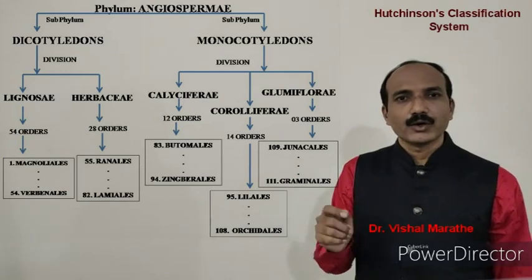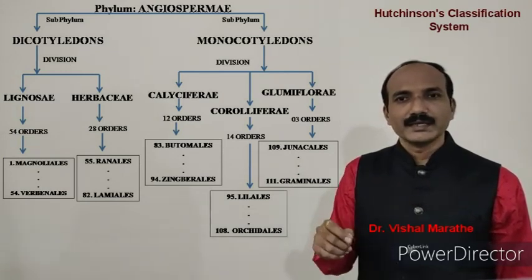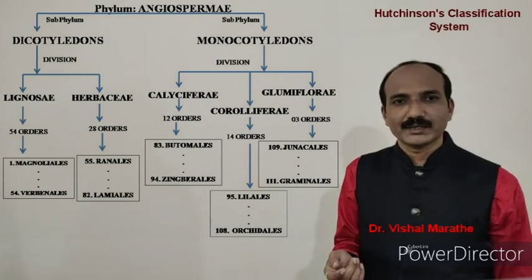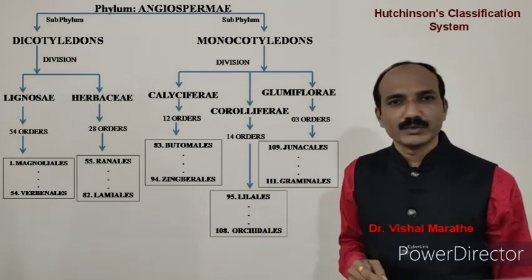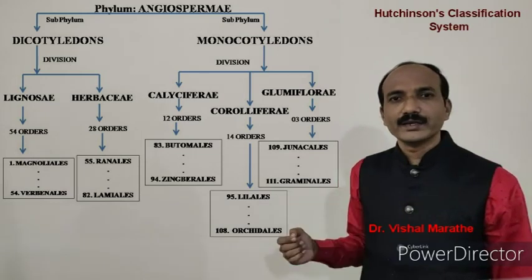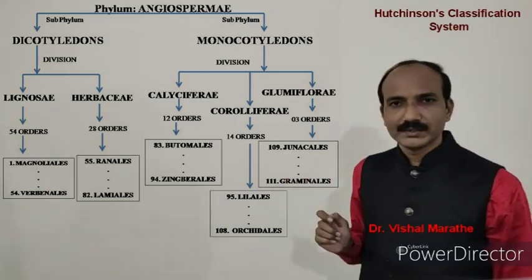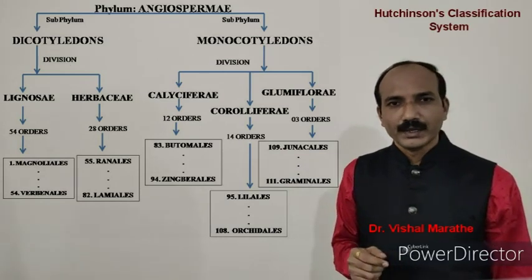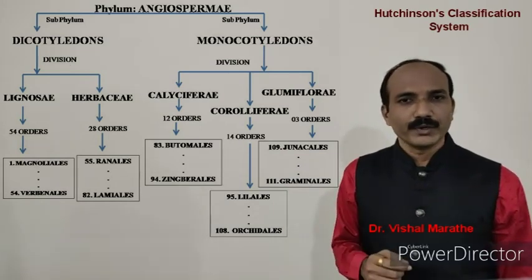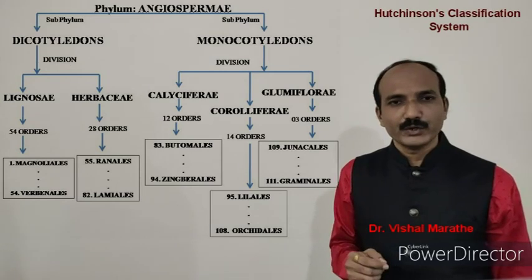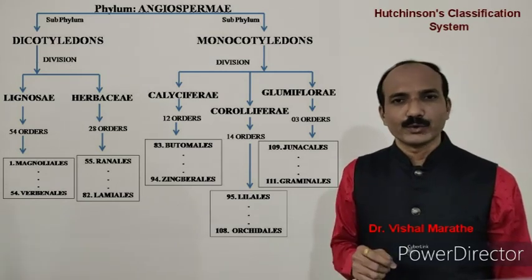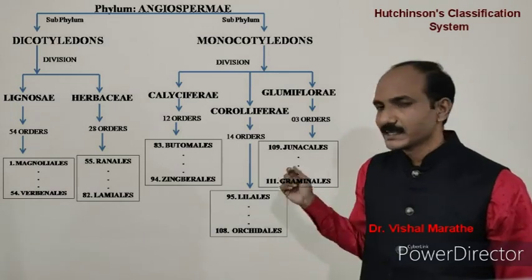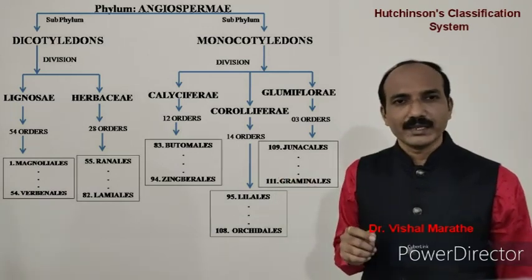The second division, Corolliferi, where calyx and corolla are almost similar or the perianth is not differentiated into calyx and corolla, was divided into 14 orders, beginning with Liliales and ending in Orchidales. The last division, Glumiflorae, where the perianth is very reduced and represented by glumes only, was divided into three orders, beginning with Juncales and ending in Graminales.